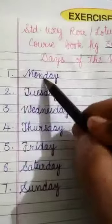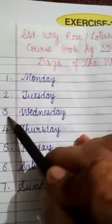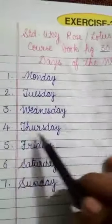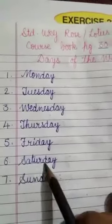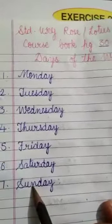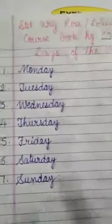First day of the week, Monday. Second, Tuesday. Third, Wednesday. Fourth, Thursday. Fifth, Friday. Sixth, Saturday, and seventh is Sunday. Thank you.